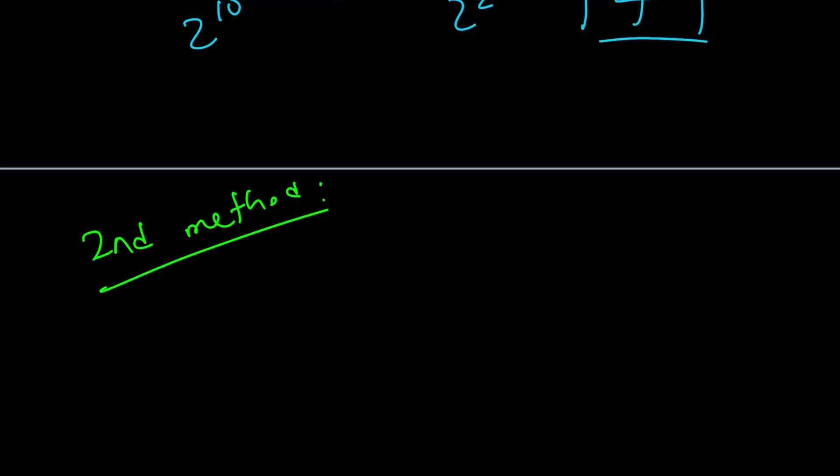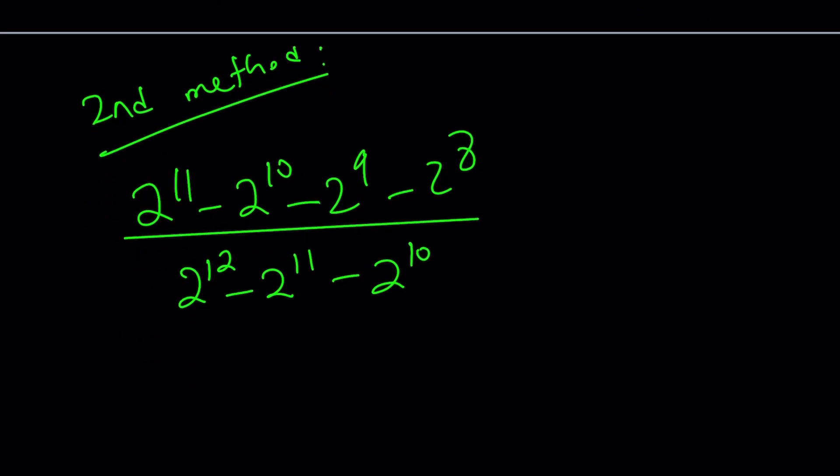And then hopefully you can compare and contrast. So we have 2 to the power 11, I'm going to write the original problem, divided by... that's a nice line. Now, my second method depends on common factors. I noticed that in the numerator, 2 to the 8th is the smallest power. So I can take it out. Let's do it. Take out 2 to the 8th.